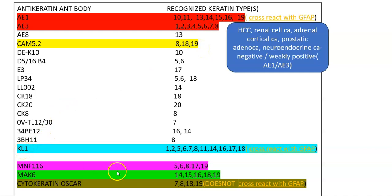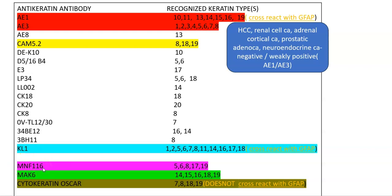KL1 is expressed in cytokeratins 1, 2, 5, 6, 7, 8, 11, 14, 16, 17, and 18. KL1 also cross-reacts with GFAP, like AE1 and AE3. MNF 116 is expressed by cytokeratins 5, 6, 8, 17, and 19.